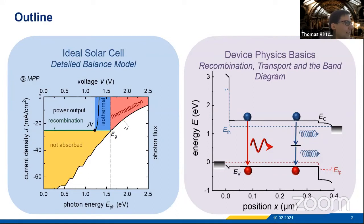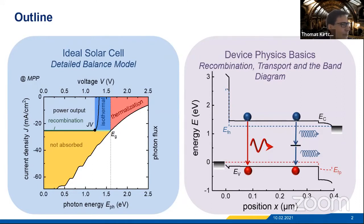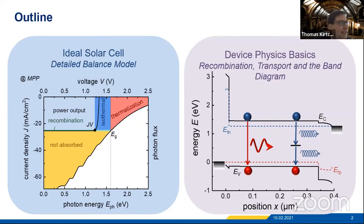The first one is the detailed balance model of an ideal solar cell. I will tell you a little bit about where it comes from, what the main losses are in an ideal solar cell, and why it has eventually 33% and not 99% efficiency. Then I will talk about key concepts in device physics — essentially recombination, transport, and the band diagram. This will be a non-exhaustive discussion, as the whole school will cover different aspects of these topics.